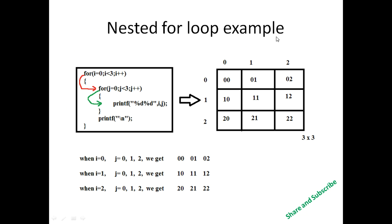This is the example of a 3x3 matrix and this is the code of the nested loop. This is the outer loop and this is the inner loop. If the condition i less than 3 in the outer loop is true, then it goes to the inner loop and the inner loop j values are executed.